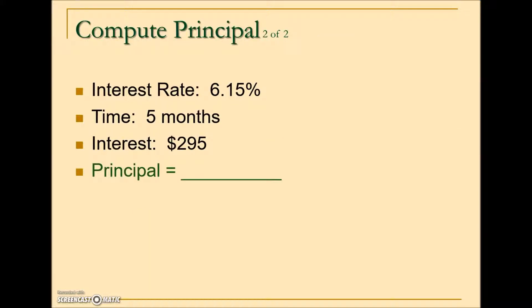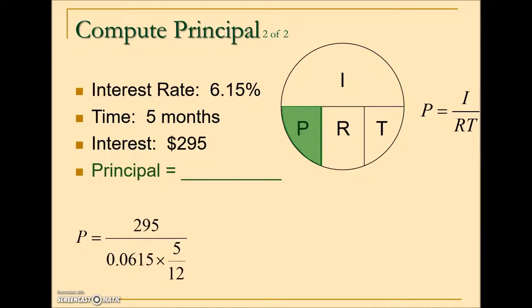Here's another one asking us for principal. This time the time is in months, so we'll have to be sure we convert that into an equivalent expression of time in terms of years. How do we solve for principal? Blocking out the P in this circle formula, it leaves us with I interest over rate times time.